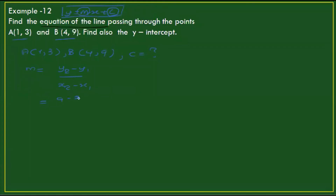Using the points where y2 minus y1 equals 9 minus 3, and x2 minus x1 equals 4 minus 1. So 9 minus 3 is 6.